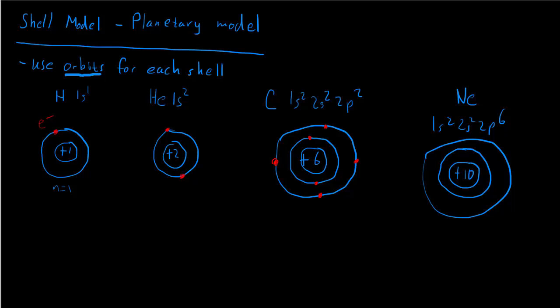Now we need to put our electrons in. We've got two electrons in the first orbit — the first shell, the n equal one shell. And we've got a total of six plus two, or eight electrons, in our outer shell: one, two, three, four, five, six, seven, eight. This picture captures some of the features of our more fancy quantum mechanical model by at least telling us how many electrons are in each shell.